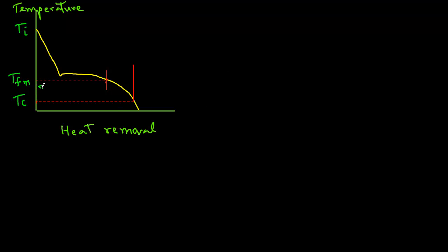Now the two parts of this curve are expressed as delta H1, that is the volumetric enthalpy change in kilojoules per cubic meter. That's the first part delta H1 and then delta H2. Again, Tfm is the mean freezing temperature, Ti is the initial temperature.